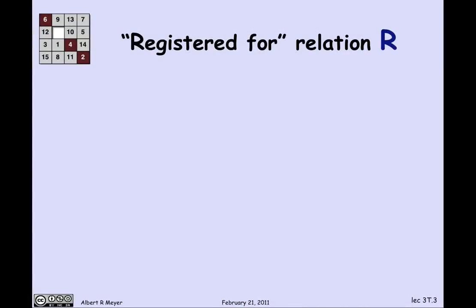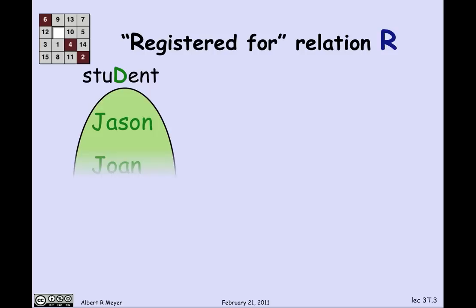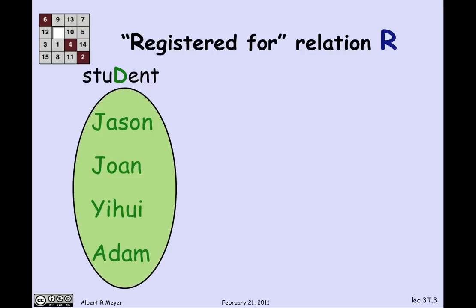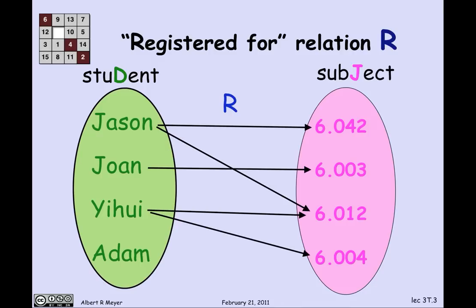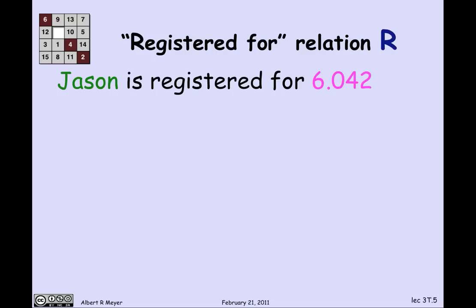Let's look at an example close to home: the 'registered for' relation, which is a relation between students — Jason, Joan, Yihue, and Adam — and subjects: 6042, 003, 012, and 004. The relation R is indicated by arrows showing which students are associated with which subjects. For example, there's an arrow connecting Jason and 6042, meaning Jason is registered for 6042.